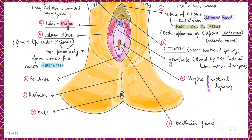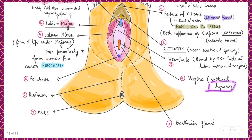Next is the vaginal opening, which has a ruptured hymen. The hymen is a membranous diaphragm — a membranous covering — and it is not a reliable indicator of virginity. It can be broken by activities such as using tampons or being active in sports like horse riding and cycling.